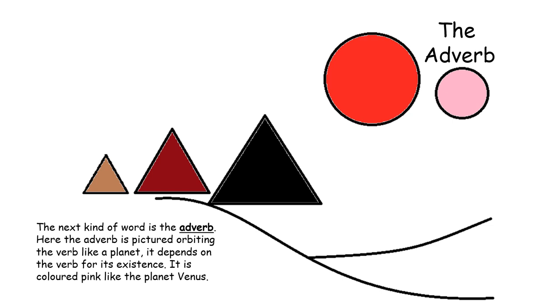The adverb is pictured orbiting the verb like a planet. It depends on the verb for its existence. It is colored pink like the planet Venus.